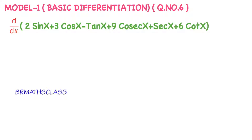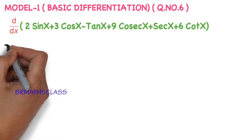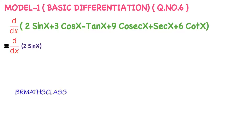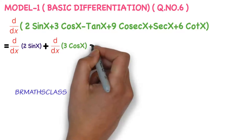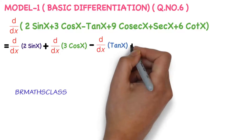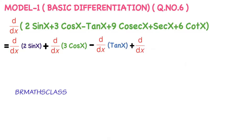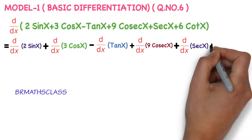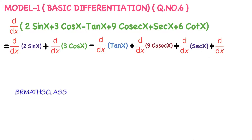Based on whatever problems we have done till now, you know how to differentiate this. We differentiate each and every function in this expression. Observe that we are differentiating each and every term: derivative of 9 cosecant x, plus derivative of secant x, plus derivative of 6 cot x. We are differentiating each and every expression in the given function.